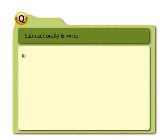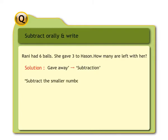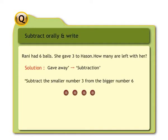Question: Rani had six balls; she gave three to Hassan. How many are left with her? Solution: 'gave away' indicates we have to perform subtraction. Subtract the smaller number three from the bigger number six. Draw six dots, score out three dots — three dots remain. Hence six minus three equals three.